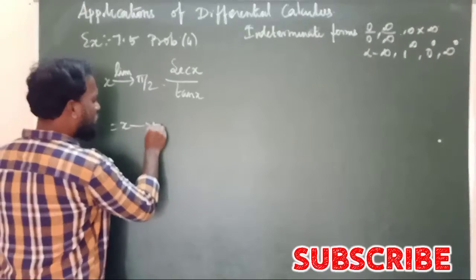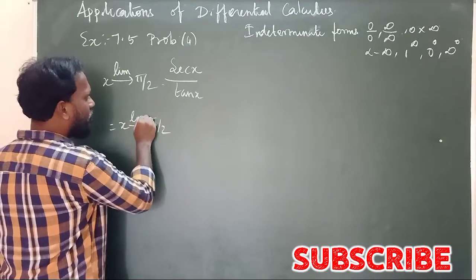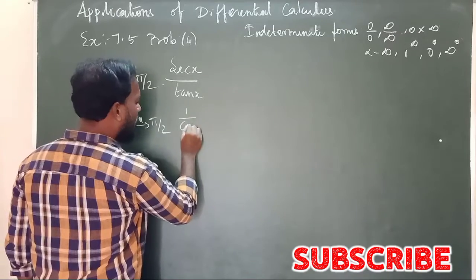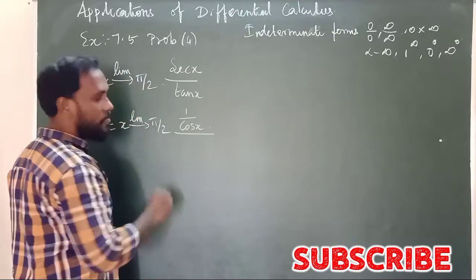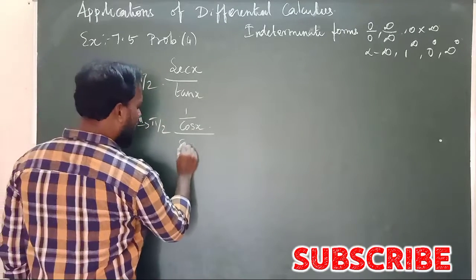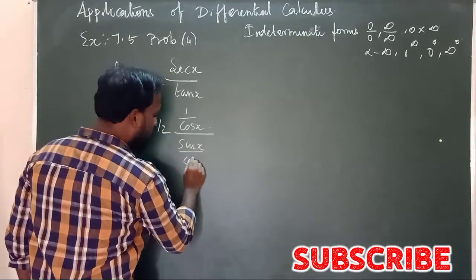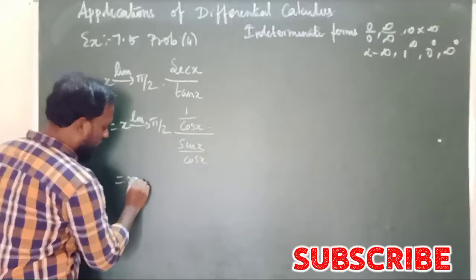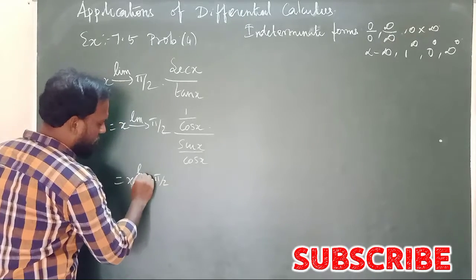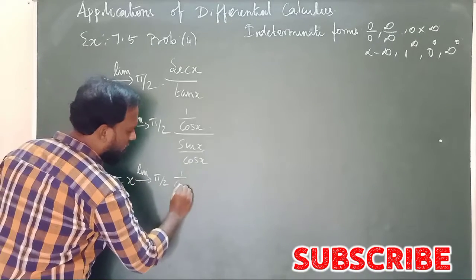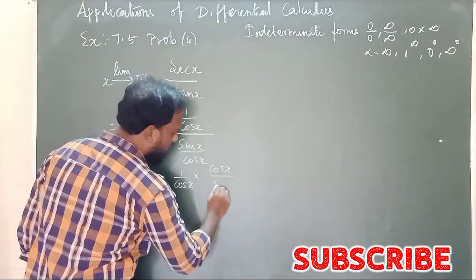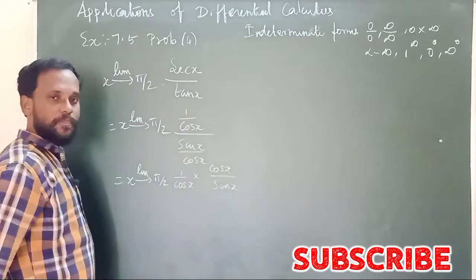Then x tends to π/2, sec x. Sec x as x tends to π/2 equals 1 by cos x into cos x by sin x.